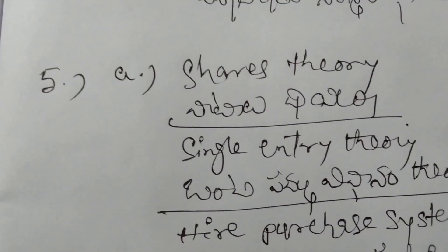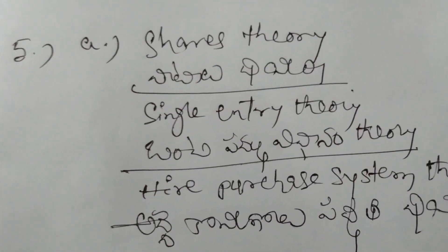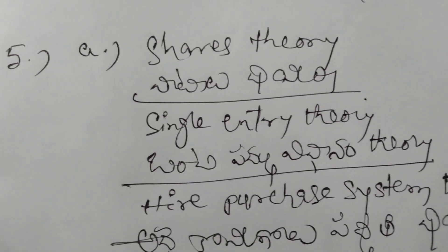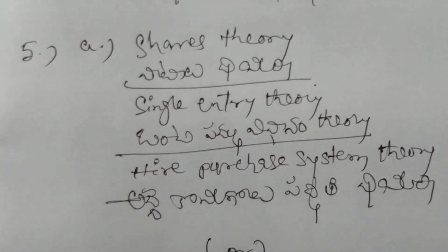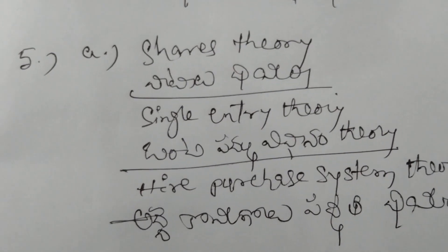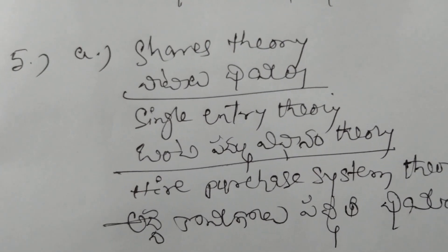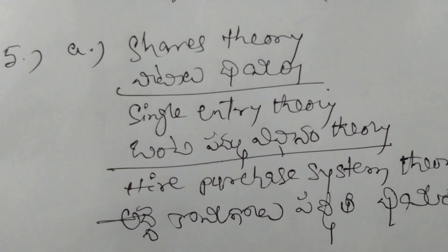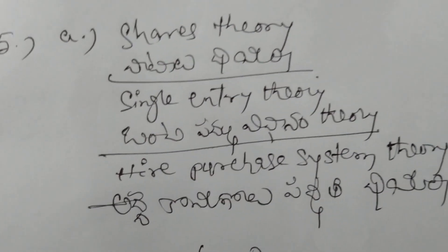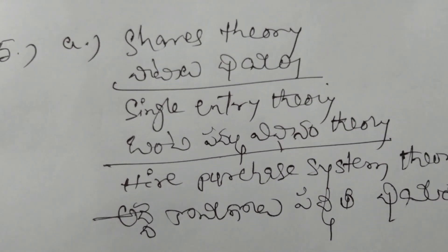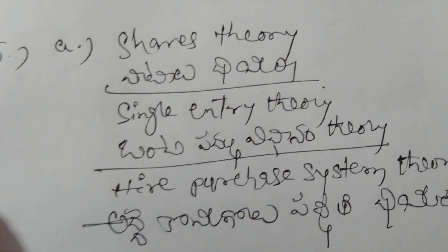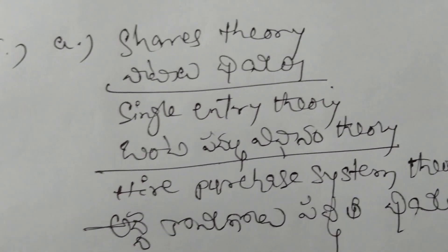The fifth and final topic is theory — shares theory. Some universities are given single entry system. One to ten method is maintained. Some other universities have hire purchase system. So this theory covers shares, single entry system, and hire purchase.